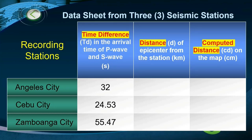They recorded the time difference in the arrival of P waves and S waves. In Angeles City, the S waves arrived 32 seconds after the P waves. In Cebu City, S waves arrived 24.53 seconds after the P waves. In Zamboanga City, it was 55.47 seconds after the arrival of the P wave.